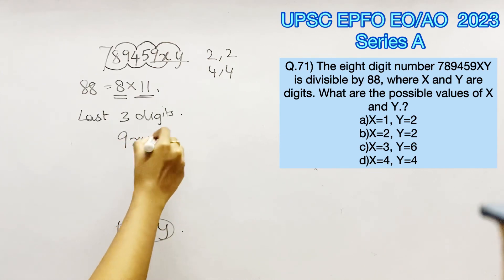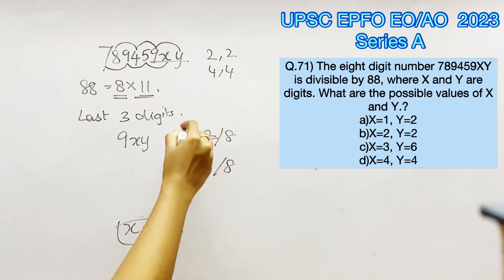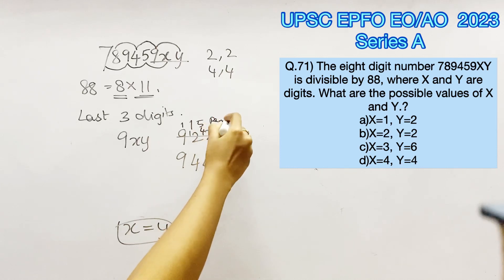Therefore 9xy should be divisible by 8 for this number to be divisible by 8. So we have two cases, 922 and 944. Dividing 922 by 8, we get quotient as 115 and remainder 2. Dividing 944 by 8, we get quotient as 118 and remainder 0.